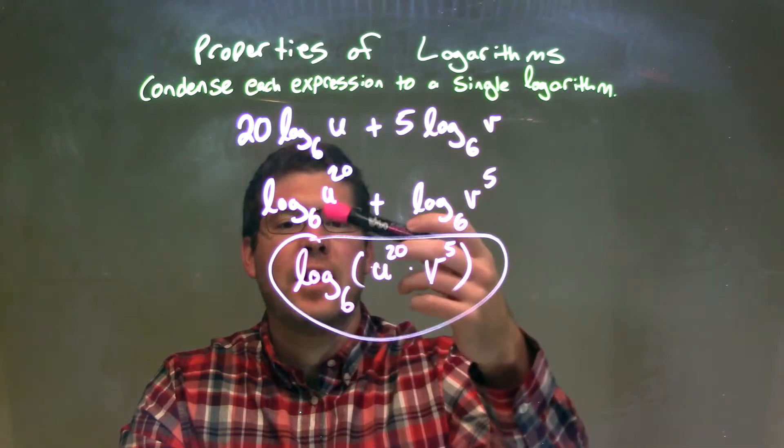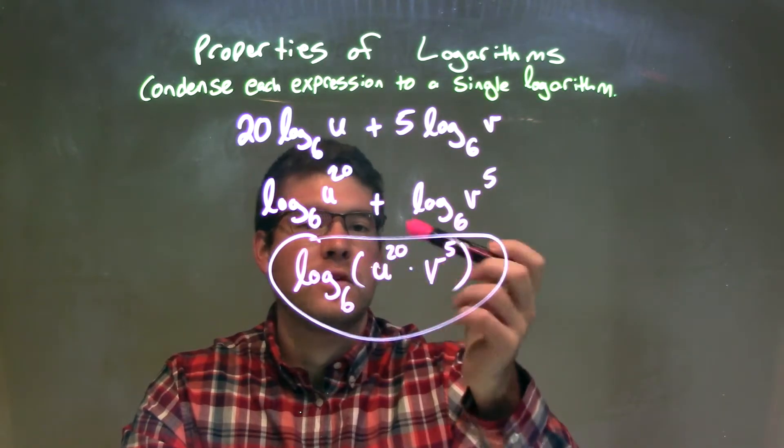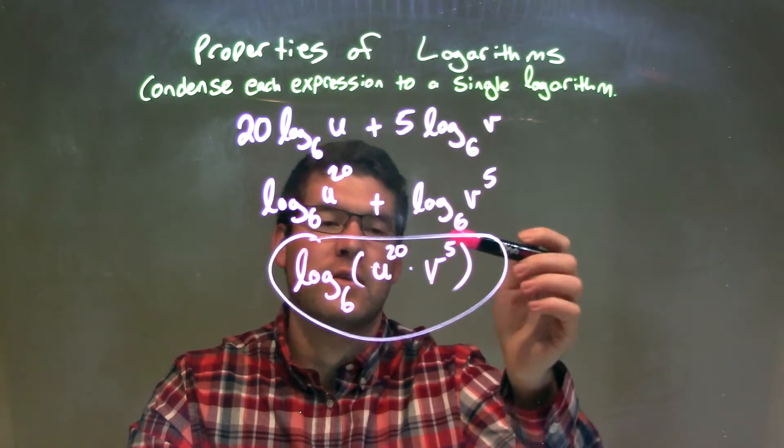So we can write this as one big logarithm as log base 6 of parentheses u to the 20th times v to the 5th, and parentheses.